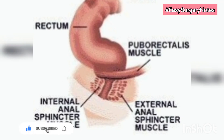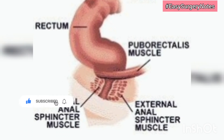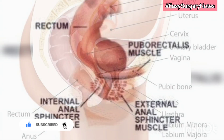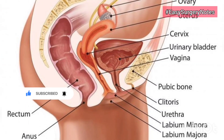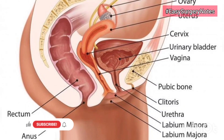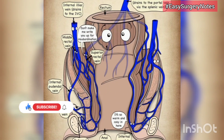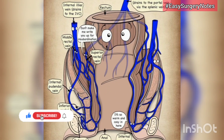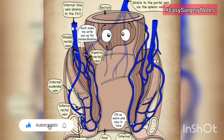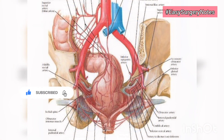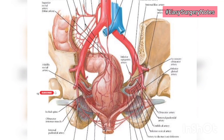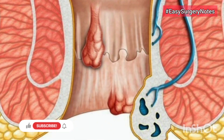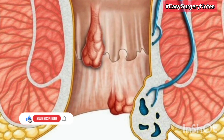The surgical anal canal extends from the anal verge to the anorectal ring. The anal canal passes downwards and backwards from the perineal flexure. It has great surgical importance both because of its role in the mechanism of rectal continence and because it is prone to certain diseases. In a normal living subject, the anal canal is completely collapsed owing to the tonic contraction of the anal sphincter, and the anal orifice is represented by an anteroposterior slit in the anal skin.